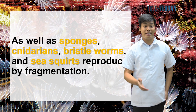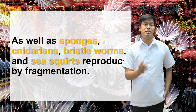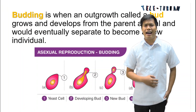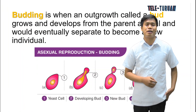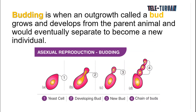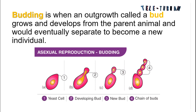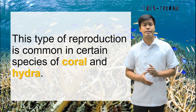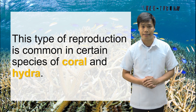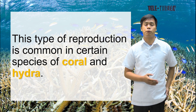Sponges, cnidarians, bristle worms, and sea squirts also reproduce by fragmentation. Another form of asexual reproduction is budding. Budding is when an outgrowth called a bud grows and develops from the parent animal and eventually separates to become a new individual. This type of reproduction is common in certain species of corals and hydra.